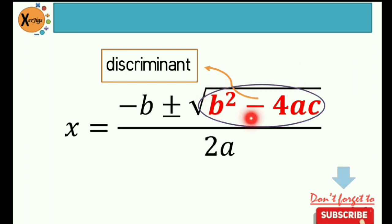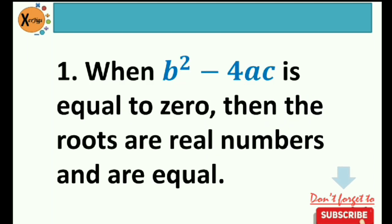It is actually located inside your radical sign or radical symbol. So at this point, we will be learning about the nature of the roots. Number 1: when b squared minus 4ac is equal to 0, then the roots are real numbers and are equal.